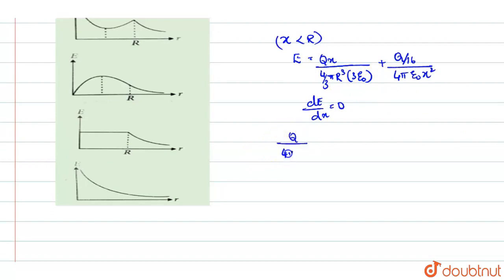you will take it as Q by 4 pi epsilon naught, you will take it common. Then, you will be retained with 1 by R cube in the first term minus 2 by 16 X cube in the second term, which is equal to 0.